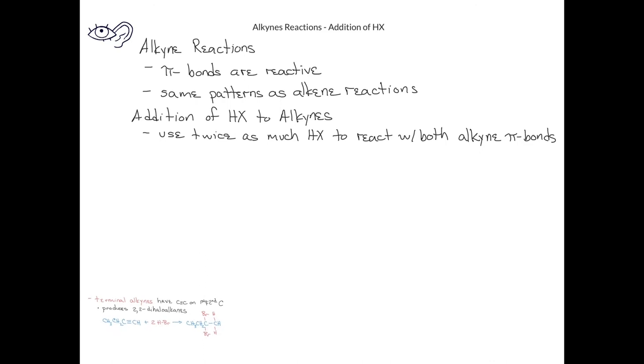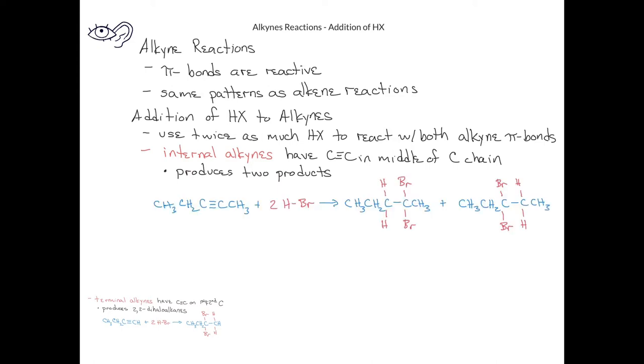On the other hand, if we have an internal alkyne, or an alkyne in which the carbon-carbon triple bond is somewhere in the middle of the carbon chain, we end up with two products. This is due to the possibilities of which carbon of the triple bond gets the hydrogen or the bromine. The first product is 2,2-dibromopentane, whereas the other product would be 3,3-dibromopentane.